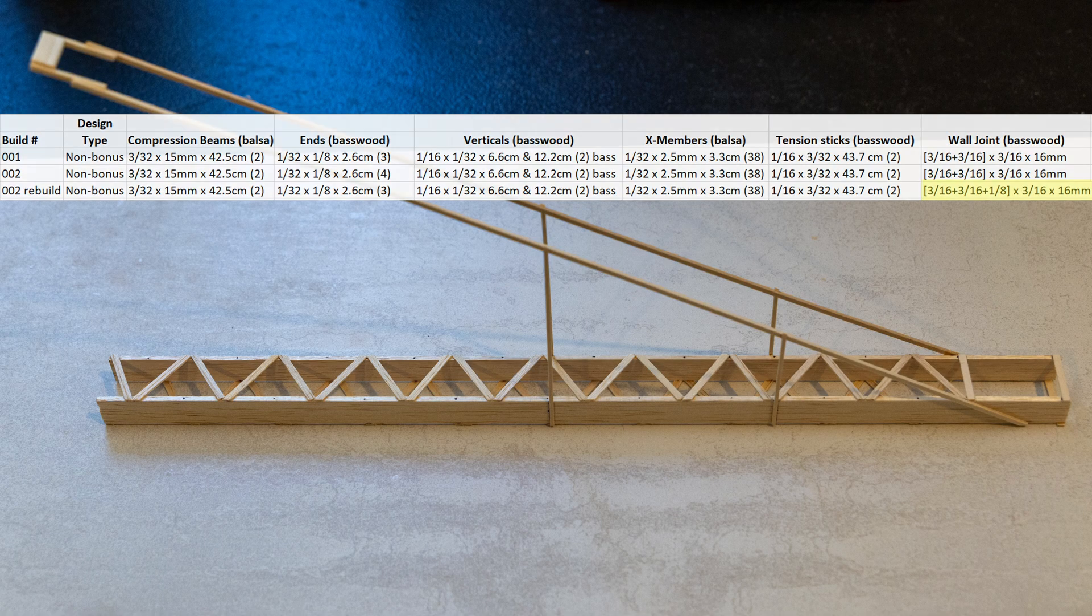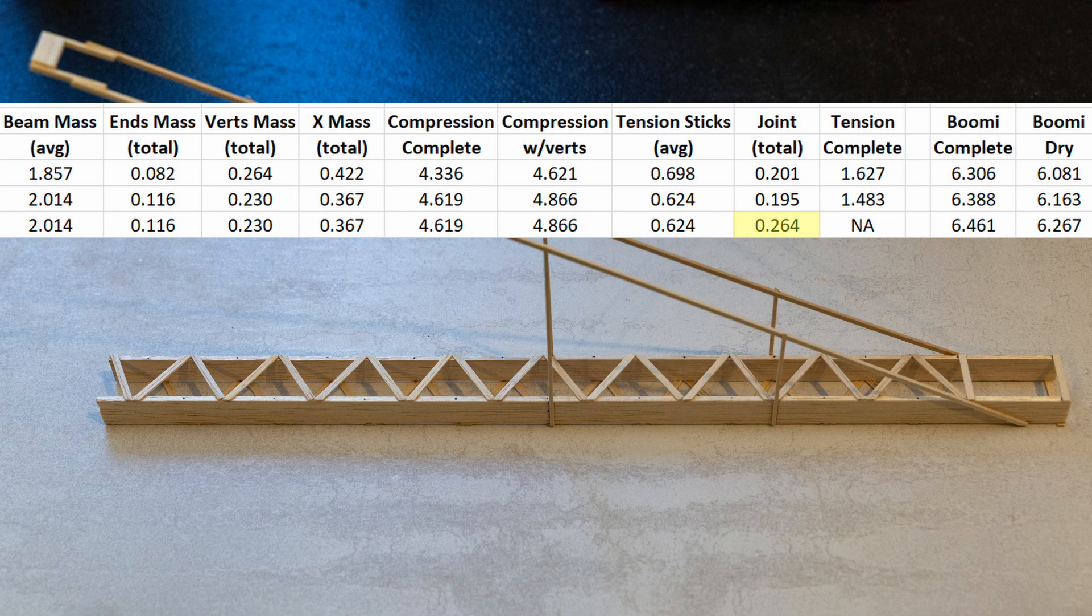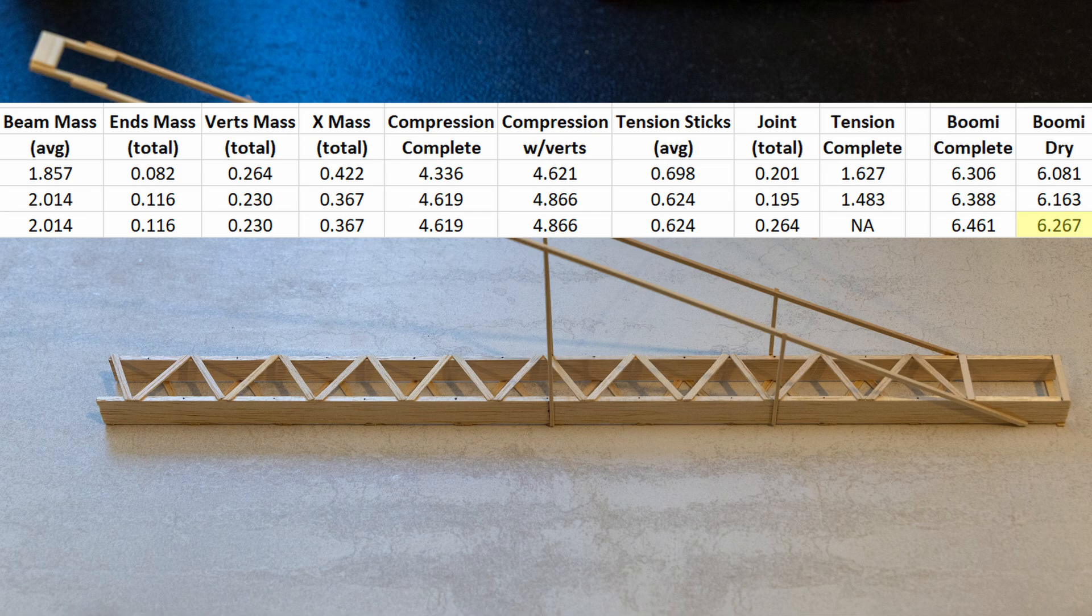Because this build wasn't from scratch, I don't have all the same data like total tension mass, but you can see that the joint piece went from 0.195 grams to 0.264 grams, and the final completed boomy gained just over 0.1 grams. Let's see if we get a different failure mode this time. Again, I'll pick up the live testing part of the way through to save some time.